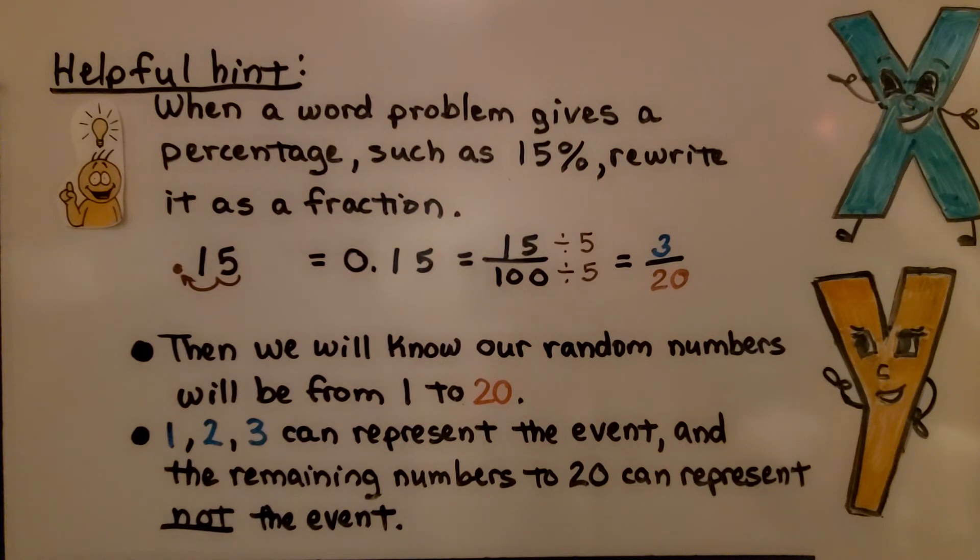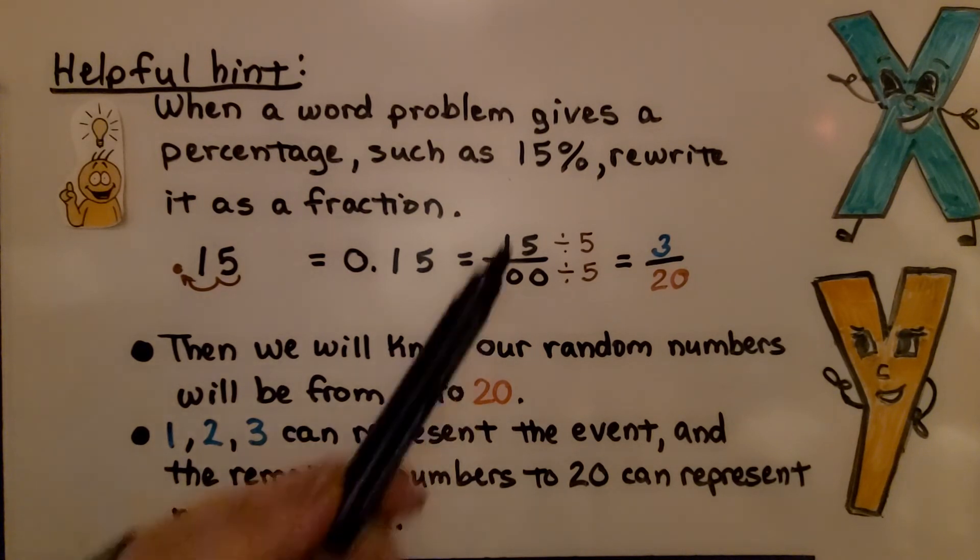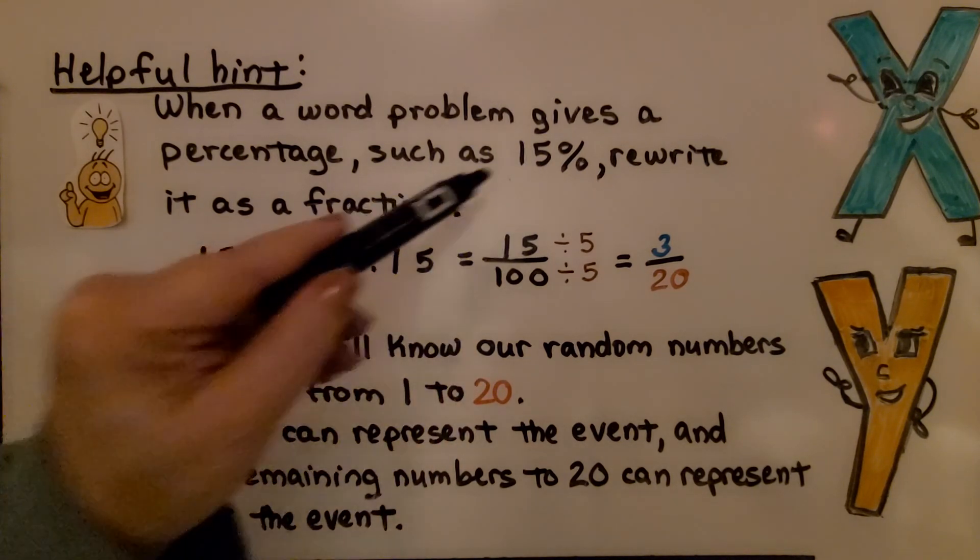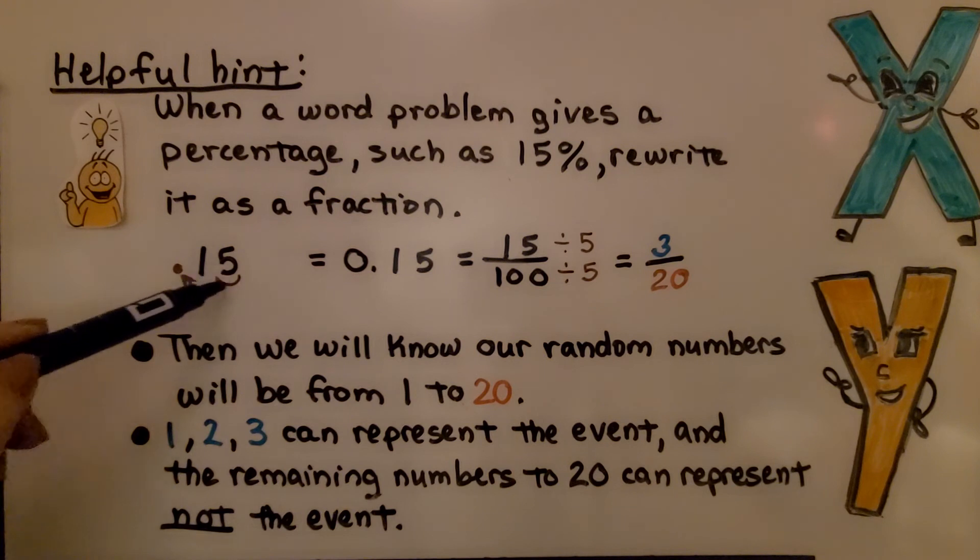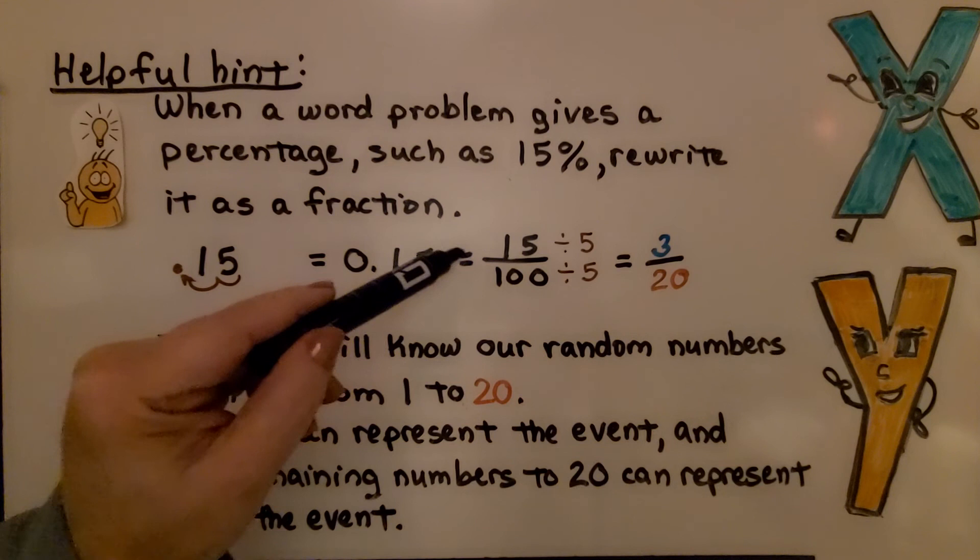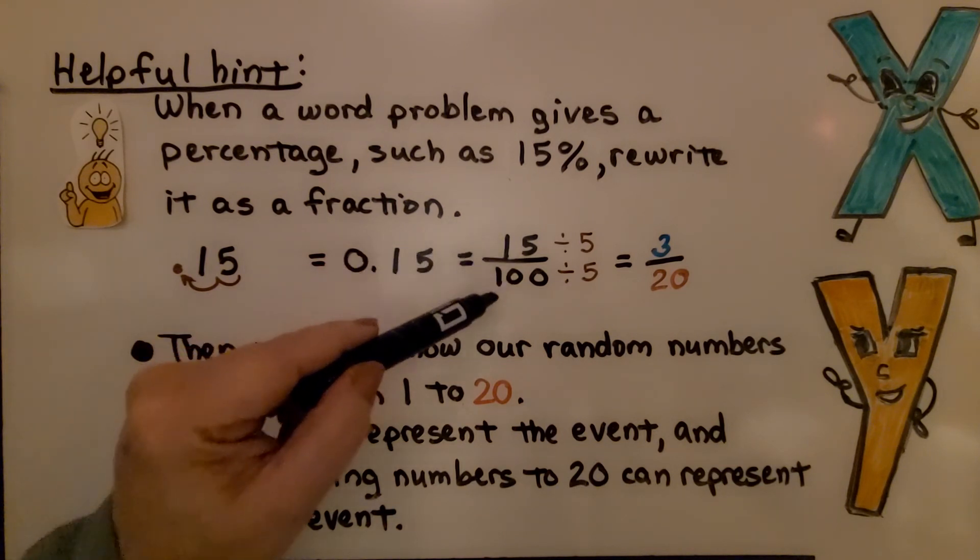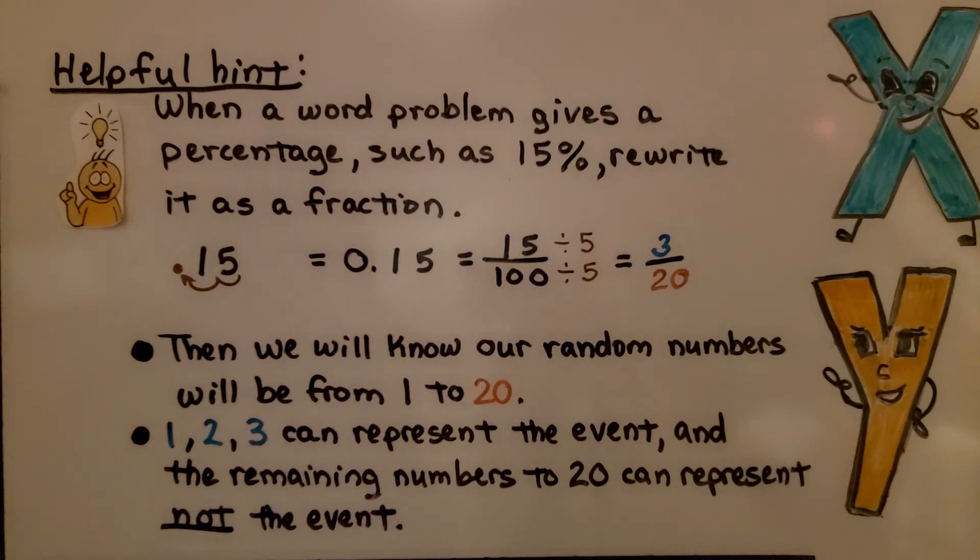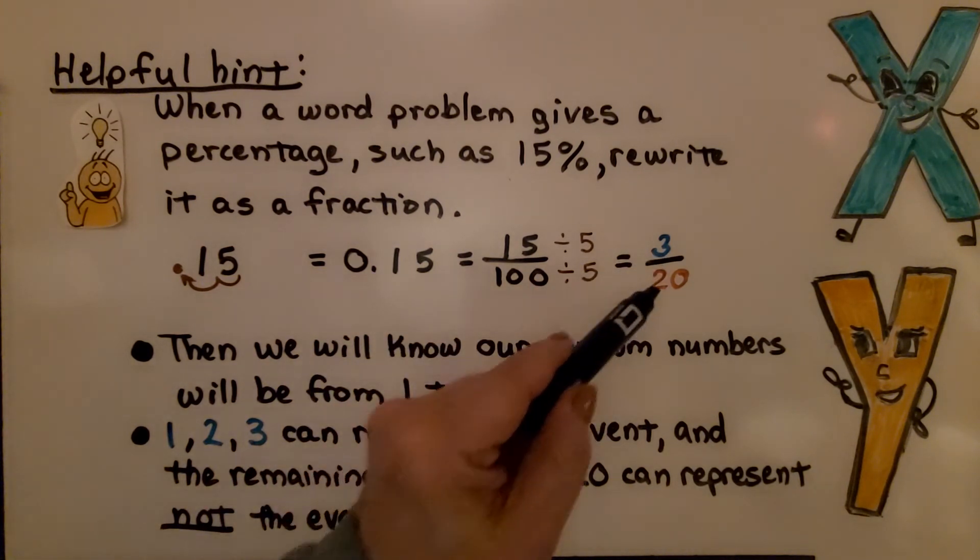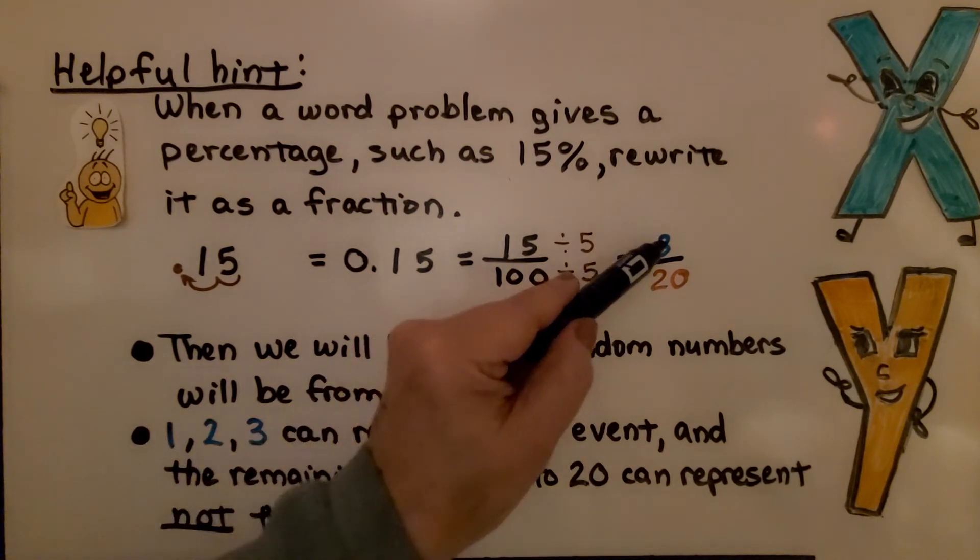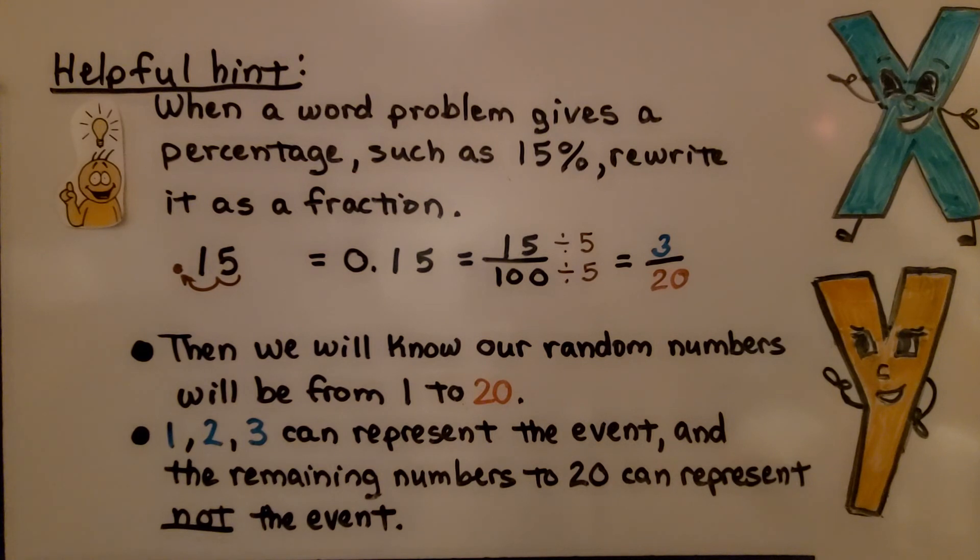Here's a helpful hint. When a word problem gives a percentage, such as 15%, rewrite it as a fraction. We take away that percentage sign and move the decimal point. That way, we have it as a decimal as 15 hundredths, and we can simplify 15 hundredths as 3 twentieths. Then we'll know our random numbers will be from 1 to 20. And 1 to 3 can represent the event, and the remaining numbers to 20 can represent not the event.